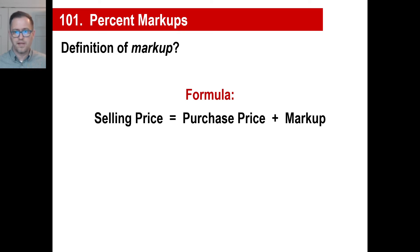You need to memorize this formula, so go ahead and write this down in your notes. You're on 101, that's what you want to write. Selling price—in other words, what you sell it for—equals the purchase price plus the markup. In other words, purchase price is what you buy it for, you the seller. You sell it for more, so it's what you purchase it for plus whatever you mark it up.